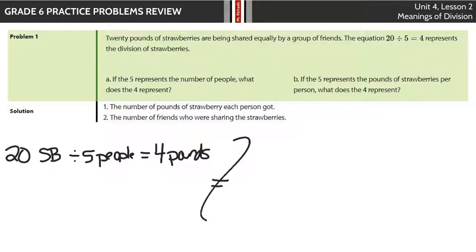In B, if the 5 represents the pounds of strawberries per person, what does the 4 represent? Well, again, if you have 20 pounds of strawberries, we're dividing it by 5 pounds per person. That means we're going to have then 4 people, 4 friends, who are sharing the strawberries.